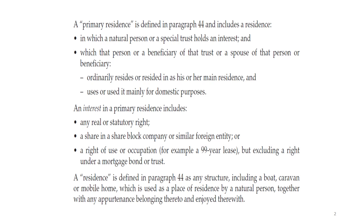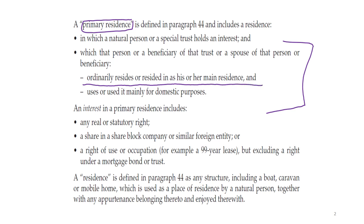The primary residence exclusion has to do with a primary residence. It's a residence in which a natural person or a special trust holds an interest — in other words, there's ownership or a right to ownership — in which that natural person or a spouse of that person ordinarily resides as his or her main residence and uses it mainly for domestic purposes. Essentially, it's the house that a natural person lives in, the place they go home to every night after work and leave every morning.